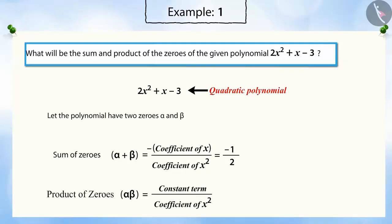Similarly, we know that the product of the zeros of the quadratic polynomial is the ratio of the constant term of the quadratic polynomial to the coefficient of x squared. Substituting the values of the constant term and coefficients of x squared gives the product of the zeros as minus 3 by 2.